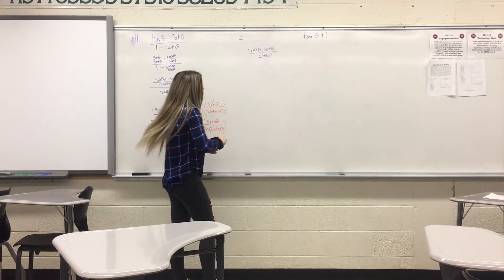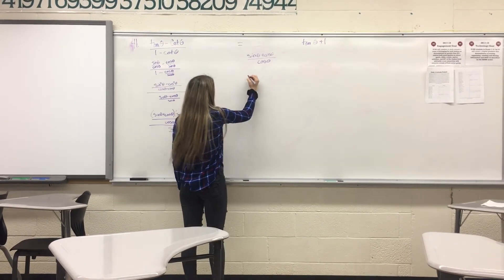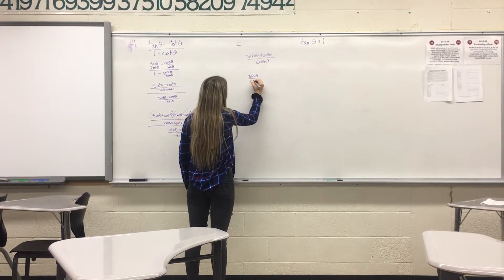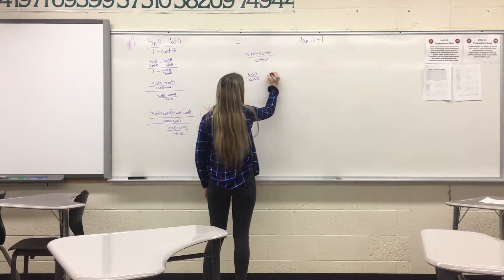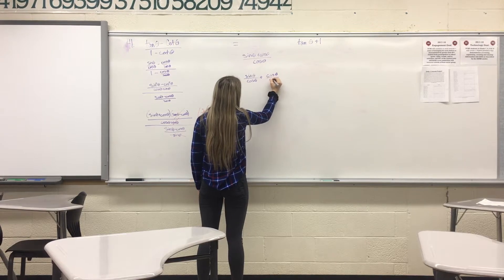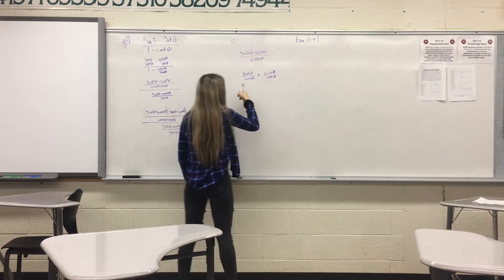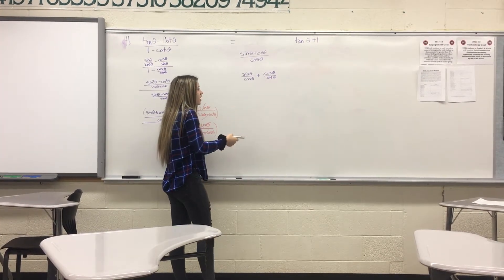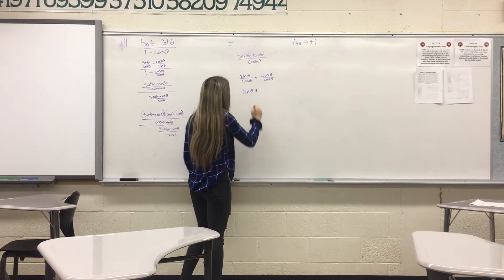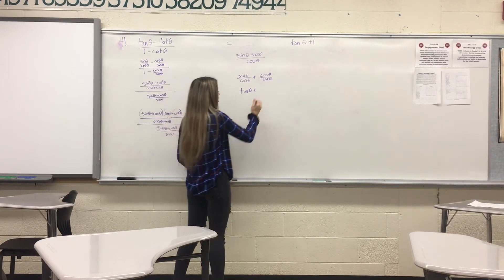Now I'm going to break that into two separate fractions. And sine over cos can be reduced to tan. And cos over cos is equal to 1.